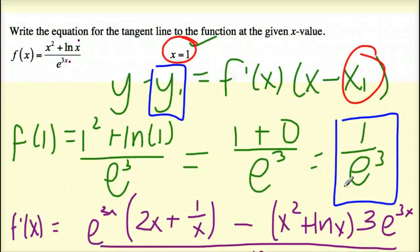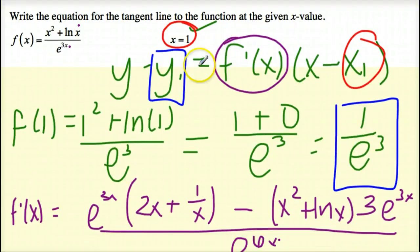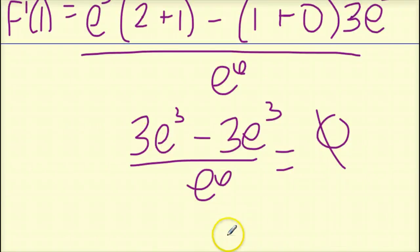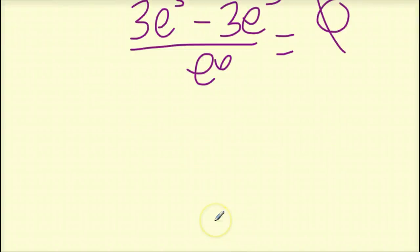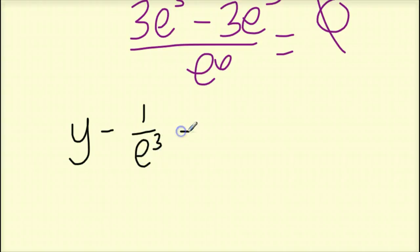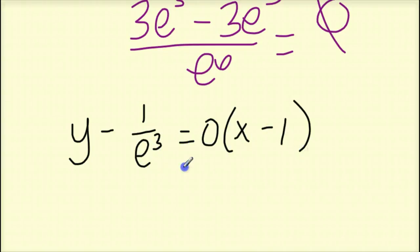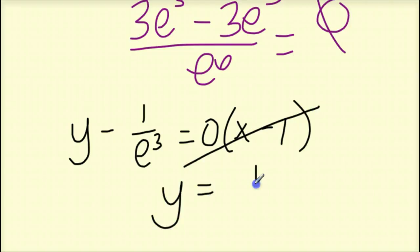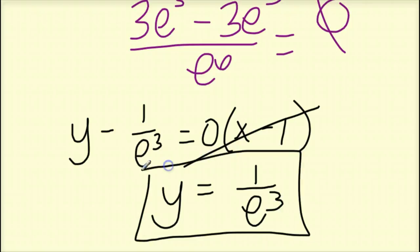I plug in slope 0 into the tangent line formula. So y minus 1 over e to the third equals 0 times x minus 1. The right side cancels, and I end up getting y equals 1 over e to the third.